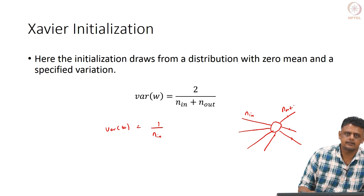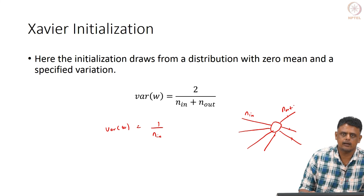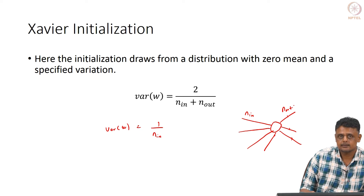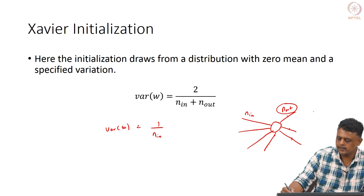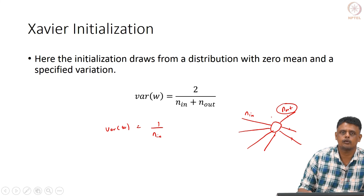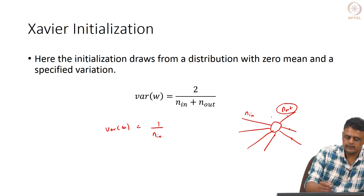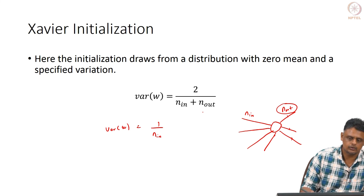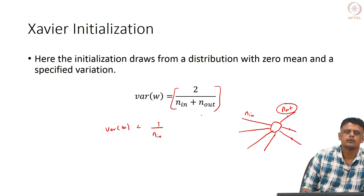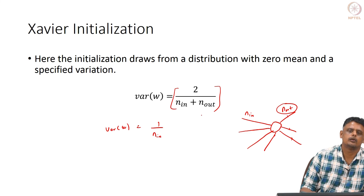The previous argument only considered the forward pass. If you also consider the backward pass — backpropagation — and want to preserve gradients, you must account for N_out as well, since gradients feed into N_out neurons. The Xavier (Glorot) initialization addresses this by setting the variance of W to 2/(N_in + N_out), scaling by the average of N_in and N_out.